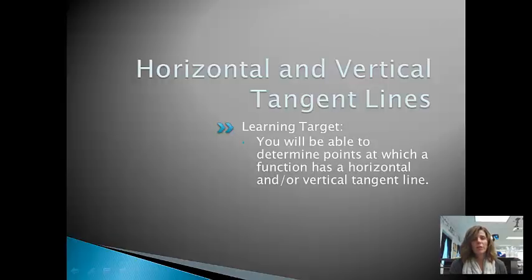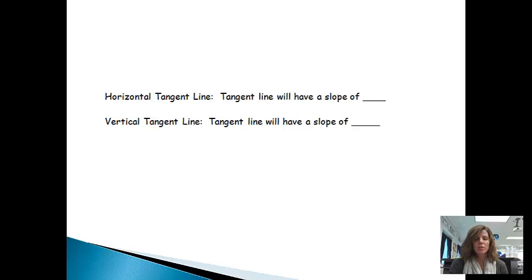Like I've said before, finding the derivative isn't always our end goal, it's doing something with the derivative that's our end goal. What we're going to be looking at in this lesson is horizontal and vertical tangent lines. At the end of this lesson, you'll be able to determine points at which a function has a horizontal and or vertical tangent line.